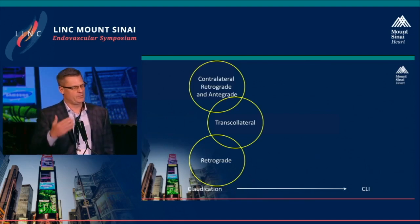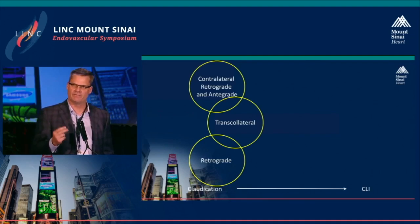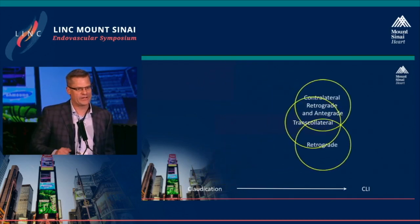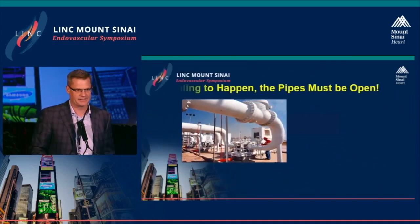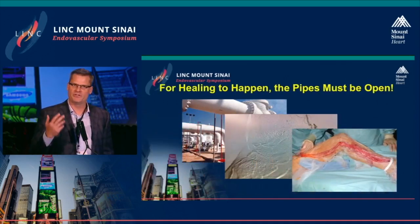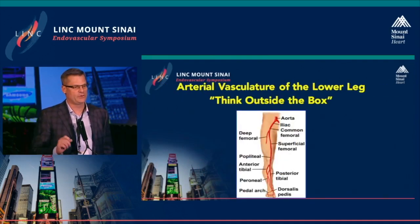With this, as you've seen in multiple lectures so far, the interventionalist, the angiologist, and the surgeon need to become versed in going from PAD to critical limb ischemia using different accesses — retrograde contralateral, antegrade common femoral, transcollateral, or retrograde access. For healing to happen, as mentioned earlier, the pipes have to be open to improve perfusion pressure and hopefully heal the wound.